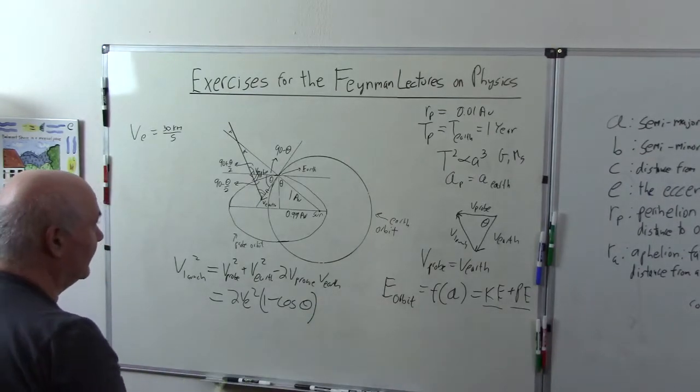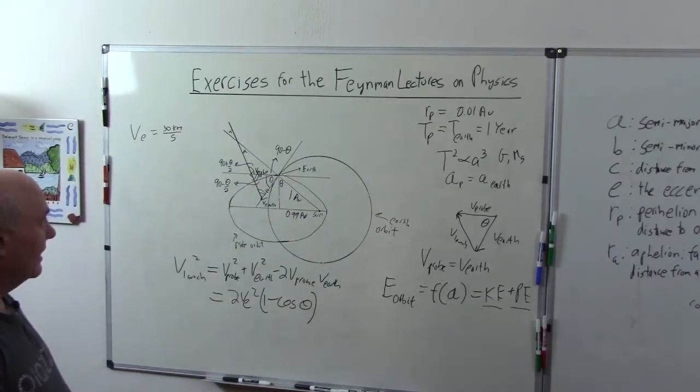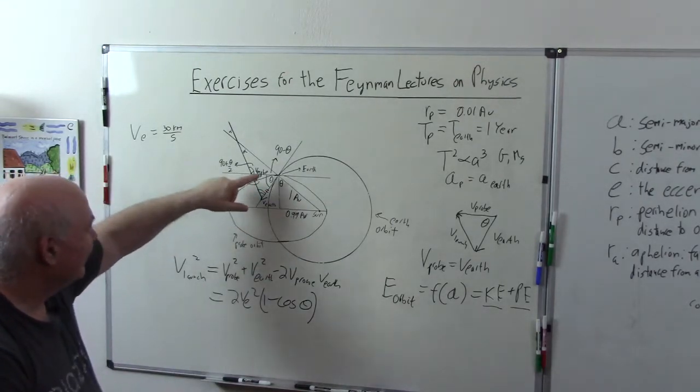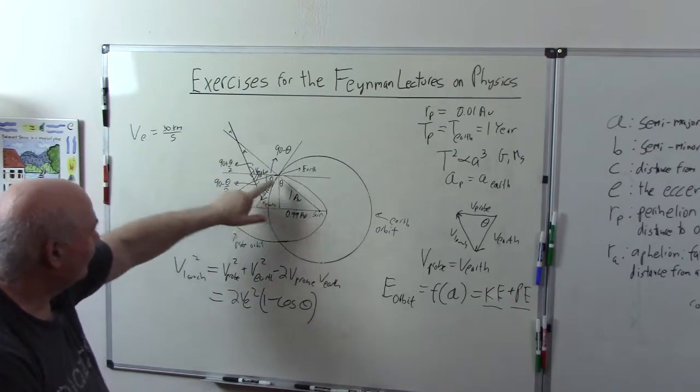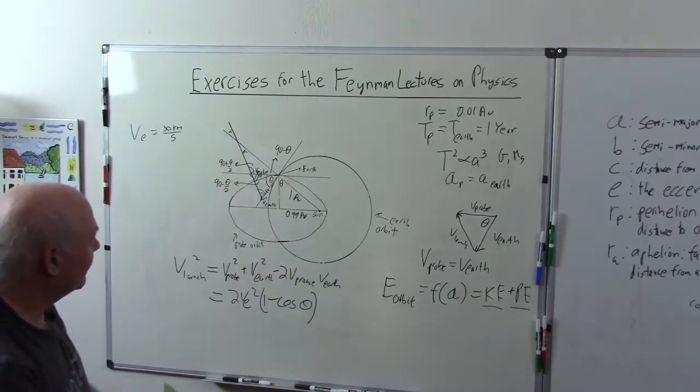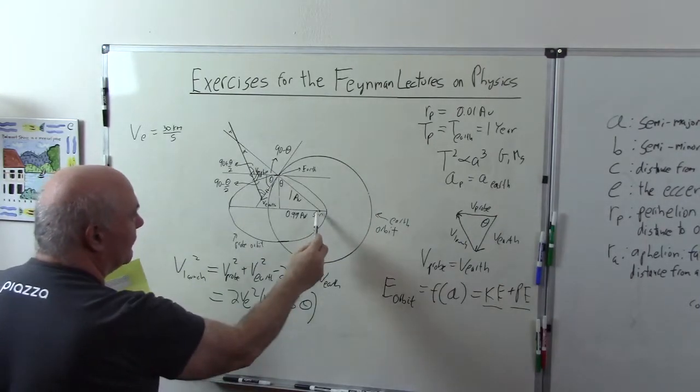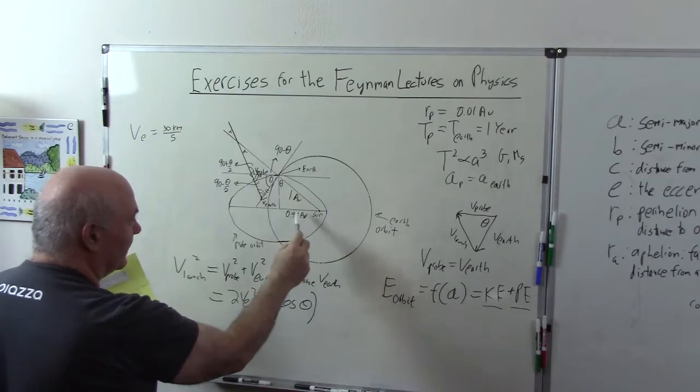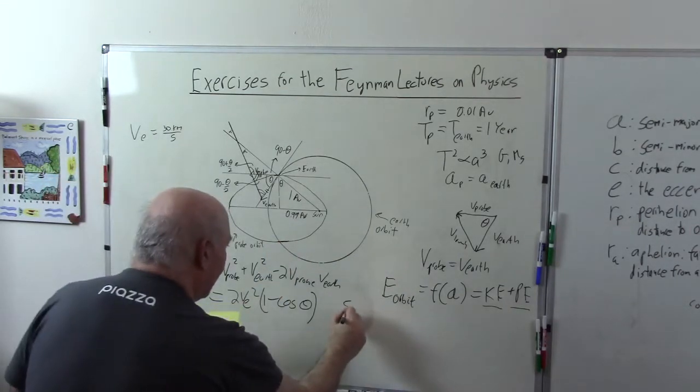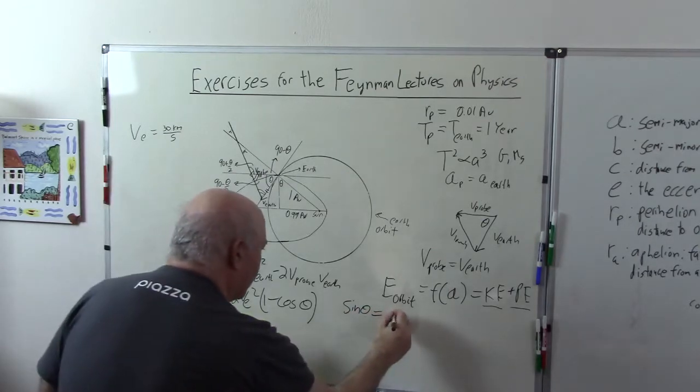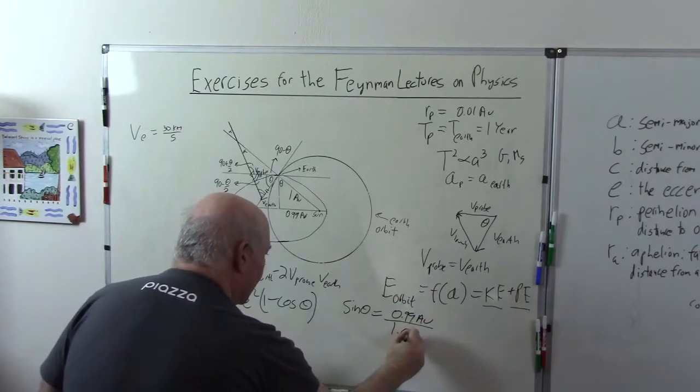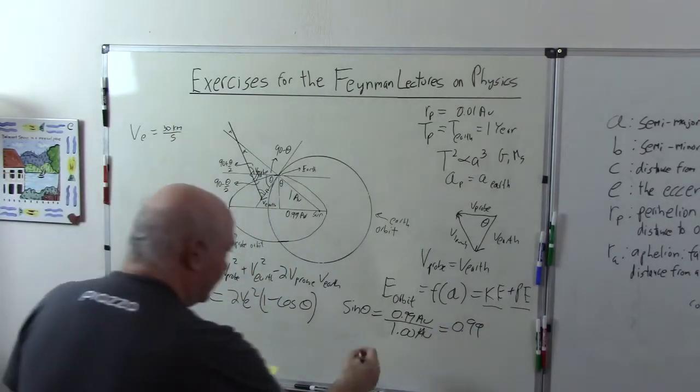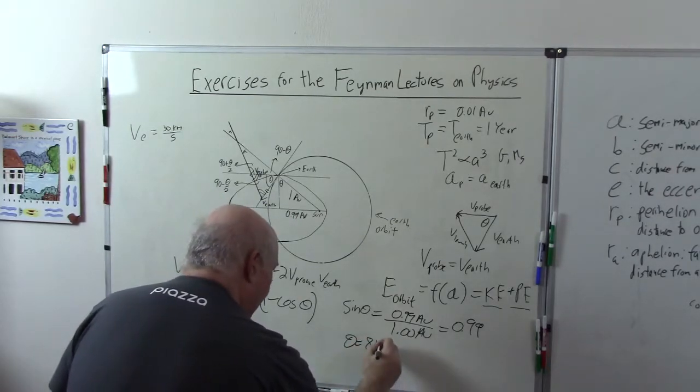And another thing we need to determine from this diagram is what is theta. And just looking at theta, this angle, this is perpendicular and this is perpendicular because this is tangent. This is a circle. So this angle is also equal to this angle theta. And we were given that the perihelion distance is 0.01 AU. Therefore, this over here is 0.99 AU. Remember the semi-major axis is the Earth's semi-major axis, which is 1 AU. So this is 0.99 AU. And that gives us that sine of theta is equal to 0.99 AU divided by 1 AU equals 0.99. So this gives us the angle theta, which works out to be theta equal 81.89 degrees.